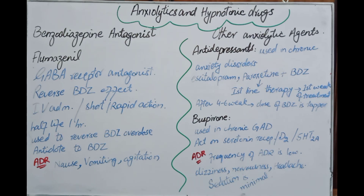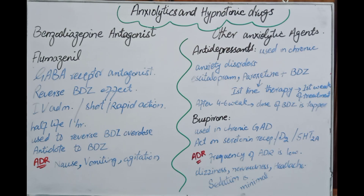Buspirone is used for chronic generalized anxiety disorder lasting 6 months or more, whether due to financial, social, or other pressures. It acts on serotonin receptors and dopaminergic D2 receptors. Adverse drug reactions of buspirone include dizziness, nervousness, headache, sedation, and tolerance.